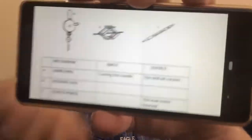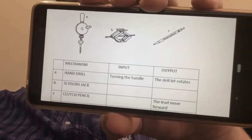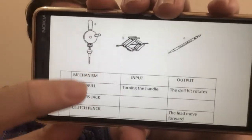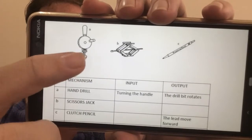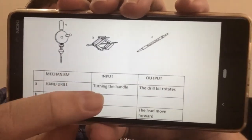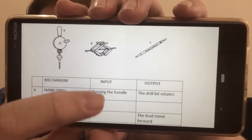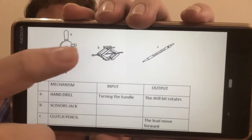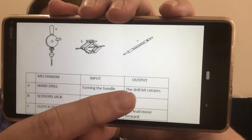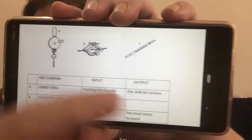And then the last one is just some quick examples of input and output questions. For example, we've got a hand drill. What is the input on the hand drill? Obviously, we turn the handle. What's the output? The drill bit rotates.